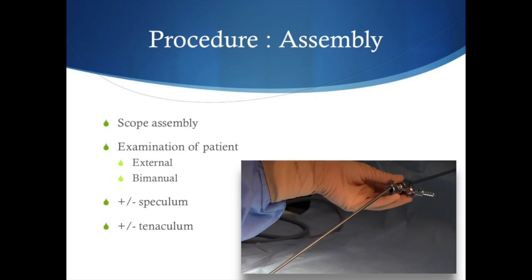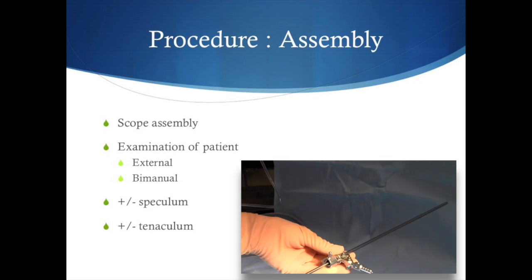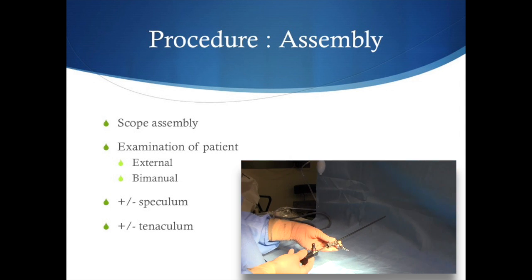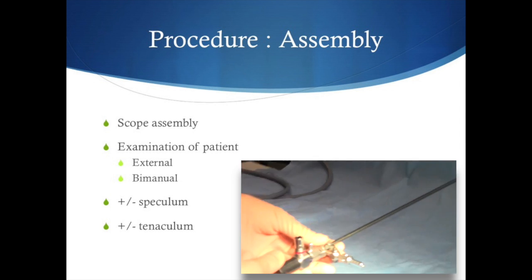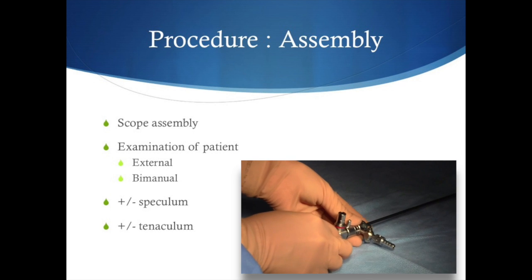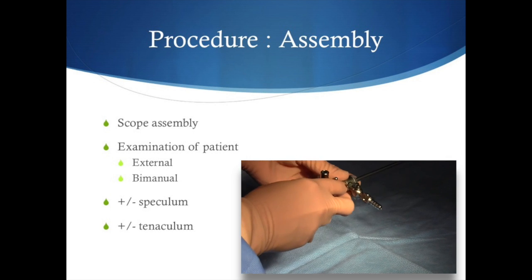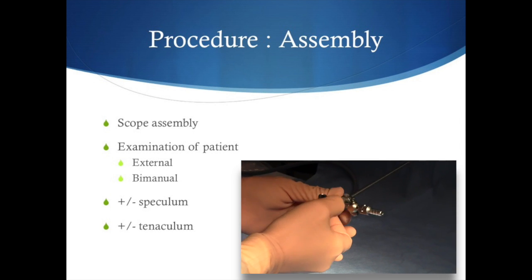The hysteroscope is assembled by inserting the scope into the outer sheath. The integrated locking system is employed to ensure that the scope and the sheath are securely attached.